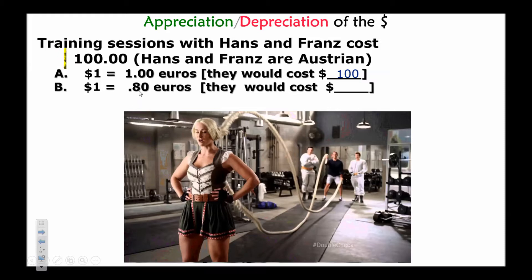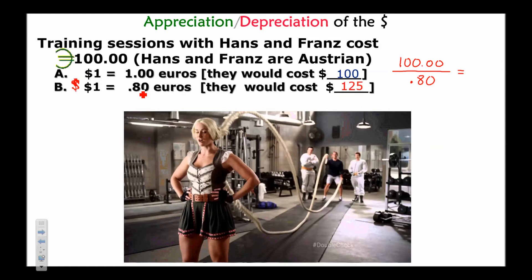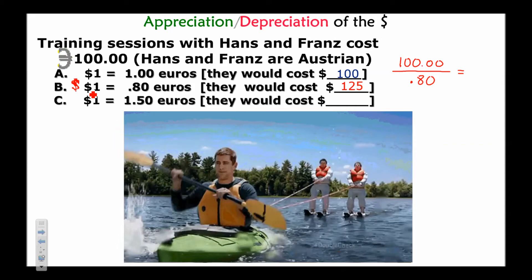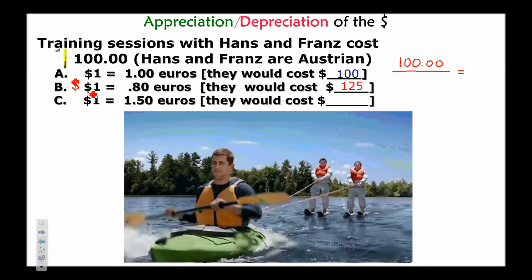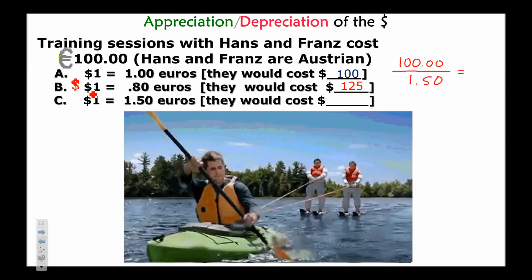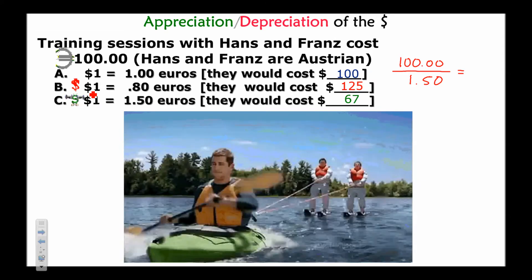To figure out the dollar cost, take the 100 euros and divide by how many euros a dollar will buy. At 0.80 euros per dollar, that gives you $125. So when the dollar went from buying 1 euro to 0.8 euros, the dollar got weak and the euro got strong — meaning foreign goods and services cost more for Americans to buy.